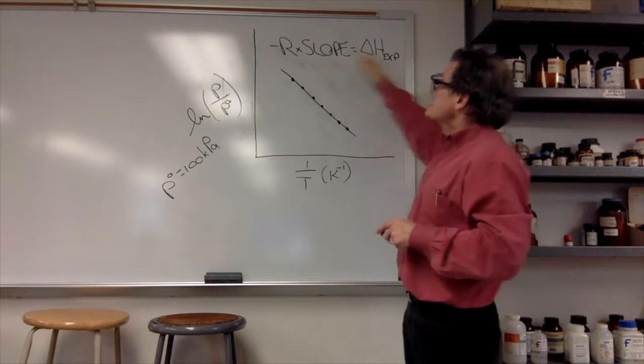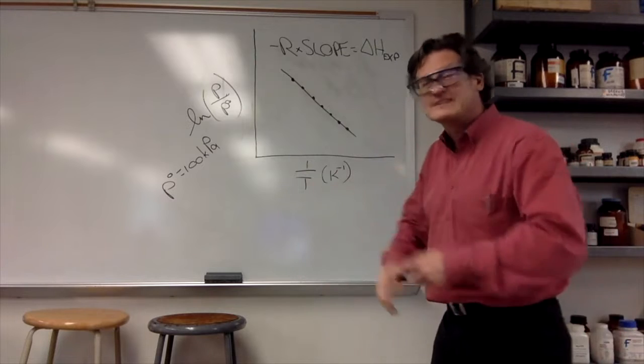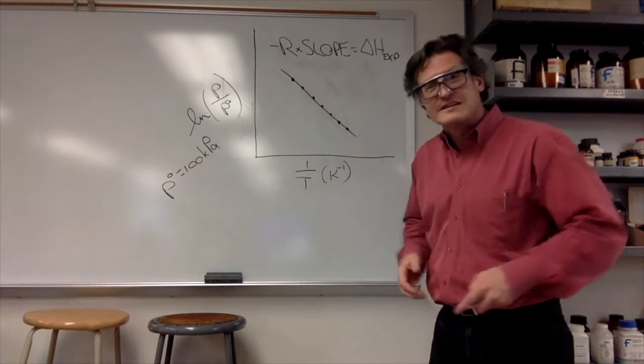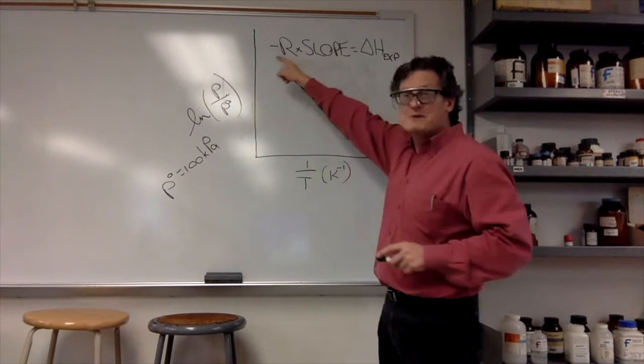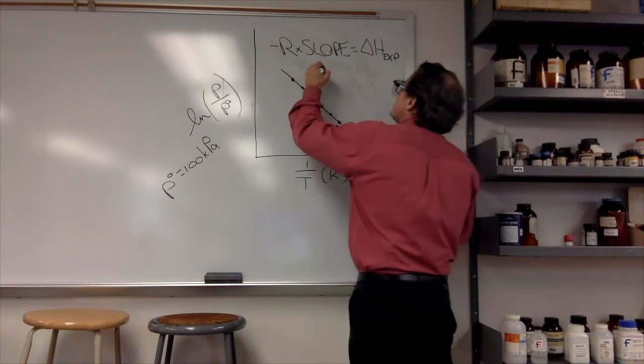The uncertainty comes from the uncertainty of the slope. You have to multiply by R. Make sure you have an error analysis section that explains you took the slope in Igor, you found the uncertainty in Igor, and then you have to multiply by R to get the uncertainty in ΔH.